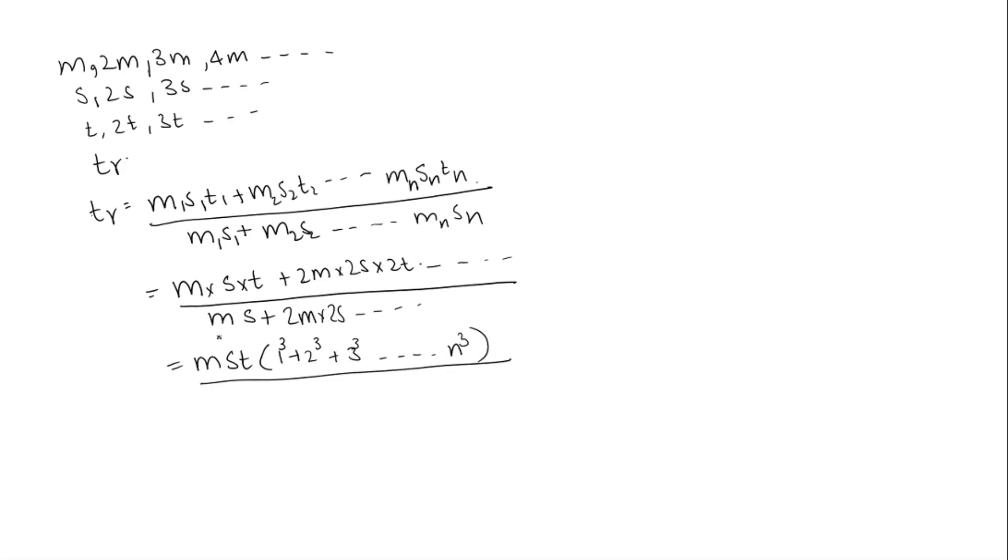In the denominator, M and S will get cancelled, leaving us with T times the summation formula.